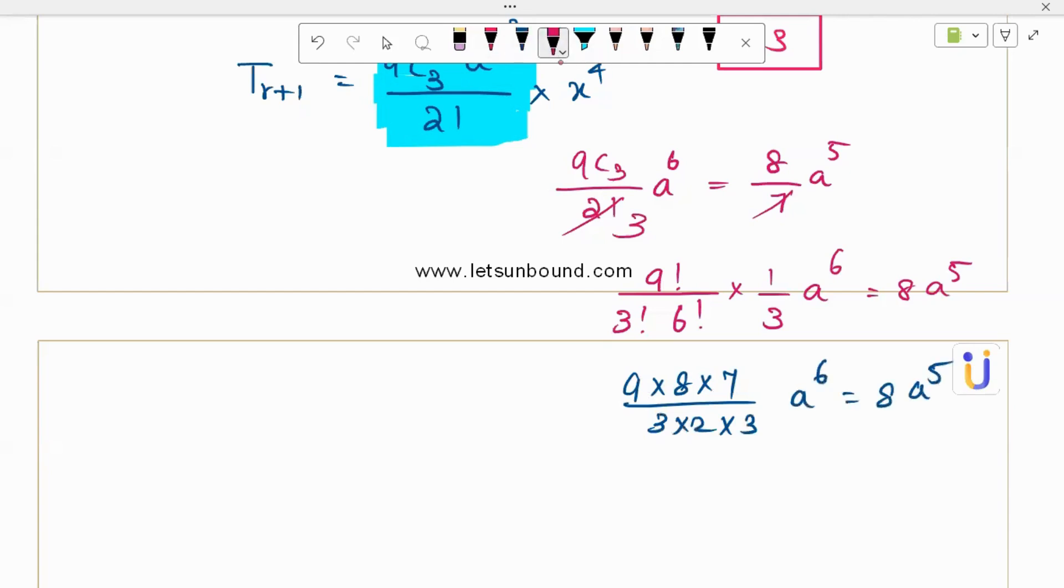We can cancel this 8 8 and 3 3s are 9. We can cancel. So you've got 7 by 2 a power 6 minus a power 5 equals 0.